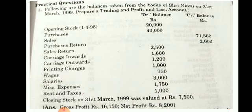In the profit and loss account, we record all indirect expenses — those expenses which are spent for the sale of goods. In the trading account, we record expenses spent for the purchase of goods. The items given in this question include: opening stock, purchases, sales, purchase returns, sales returns, carriage inward, carriage outward, printing charges, wages, salary, miscellaneous expenses, and rent and taxes.